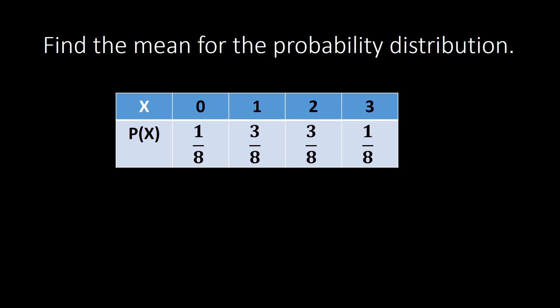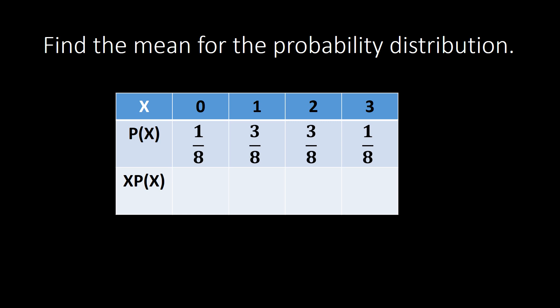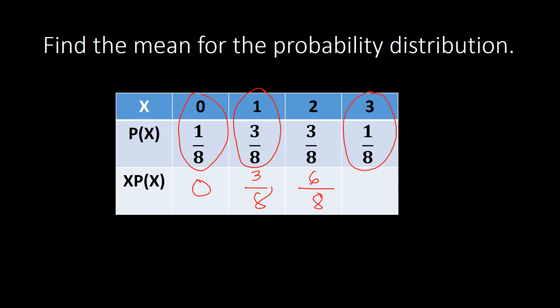To find the mean using the table, we are going to simply add one more row which will hold the product of x and the probability P(x). So we have: zero times 1/8 is zero, one times 3/8 is 3/8, and two times 3/8 — multiplying the whole number by the numerator — gives 6/8. Next, three times 1/8 gives 3/8.